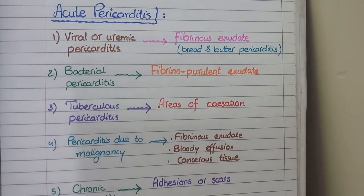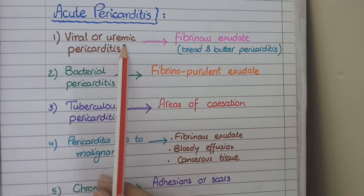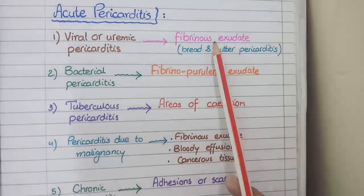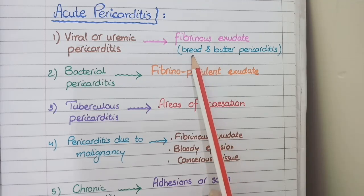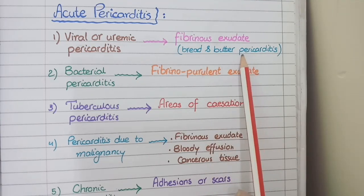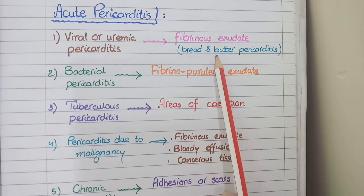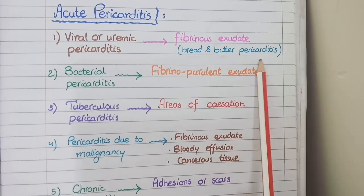Now let's discuss the pathological features of pericarditis. If pericarditis is due to viral infections or kidney failure — called uremic pericarditis — an edematous fibrinous exudate will be deposited between the two layers of the pericardium in the form of butter. This pattern is known as bread-and-butter pericarditis, because the two pericardial layers resemble pieces of bread and the fibrinous exudate between them appears like butter.